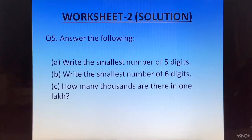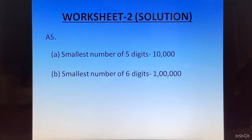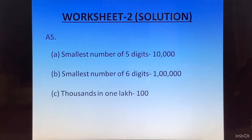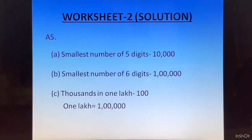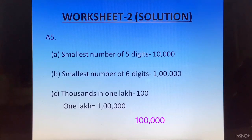Question 5: the smallest 5-digit number is 1 followed by 4 zeros — 10,000. The smallest 6-digit number is 1 followed by 5 zeros, which is 1 lakh. For how many thousands in 1 lakh: 1 lakh is written as 1,00,000. Comparing: 9,000 is 9 followed by 3 zeros; 10,000 is 10 followed by 3 zeros; so 1,00,000 is 100 followed by 3 zeros, which means 1 lakh has 100 thousands.